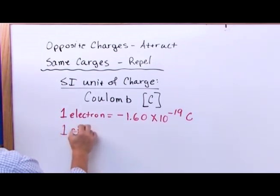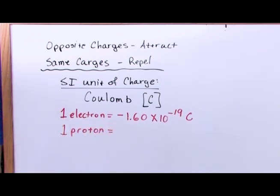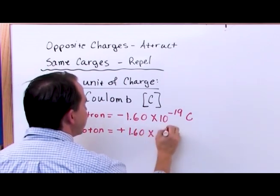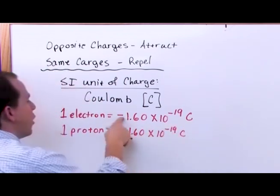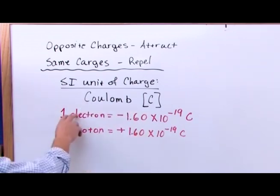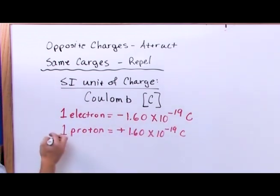A proton has exactly the same charge as an electron, but it's positive. So a proton's charge is positive 1.6 times 10 to the negative 19 coulombs. The only difference between the two is one is positive and one is negative. You put these two guys in the room together, they're going to begin to attract. If you have two electrons next to each other, they will repel. You put two protons together, they will repel. What we're basically leading up to here is an equation that tells you what the force is between these charged objects.